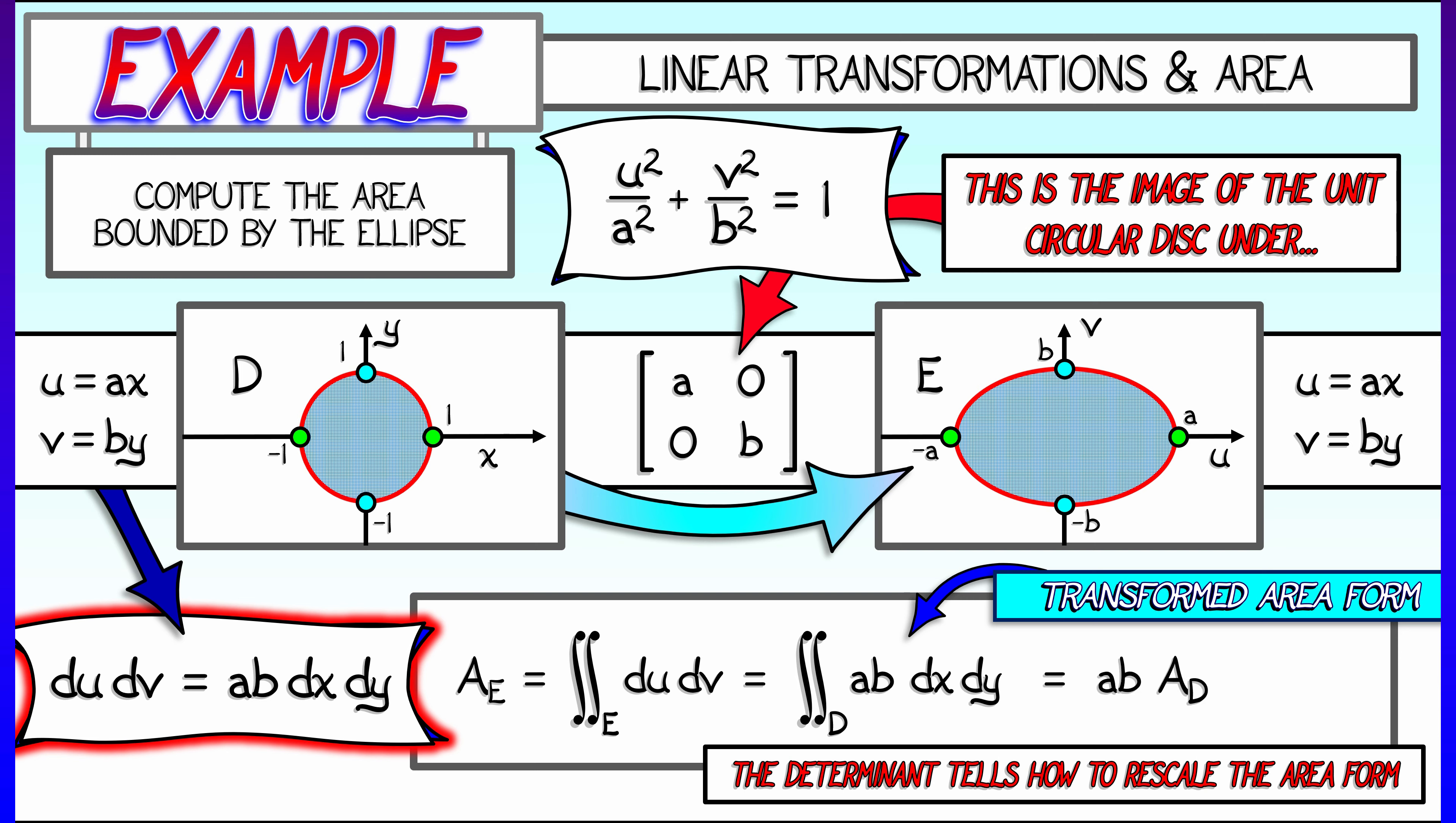And since ab is a constant, we pull that out. We integrate dx dy over D. That's just the area of D, the unit disk. That means the area of our ellipse is ab times pi.